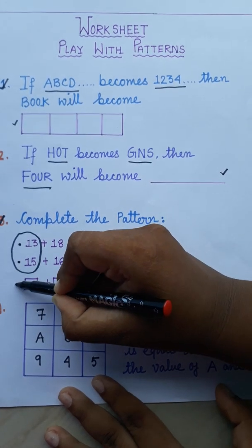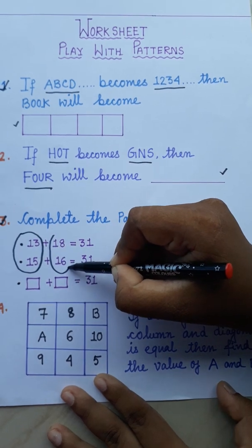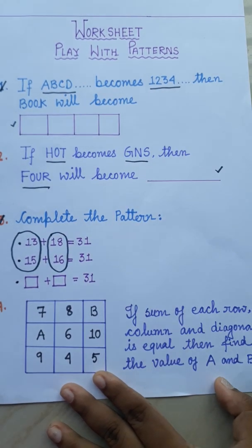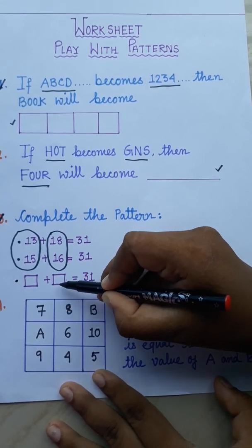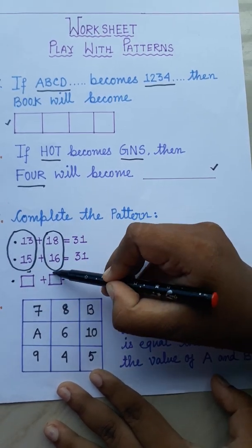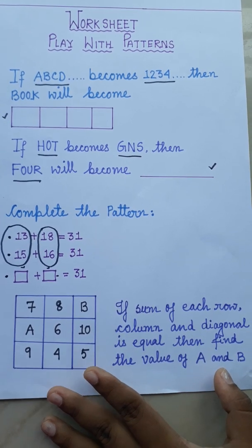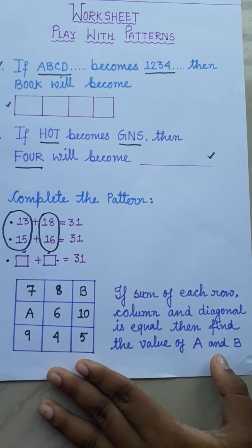So here also the number will increase by 2. And here in this line, you can see the numbers are decreasing by 2. So here also the number will decrease by 2. Then you will get the numbers here and here, and your pattern will be complete. So in this way, you will have to complete this pattern.